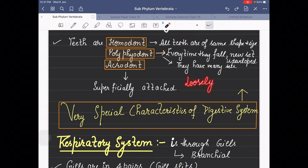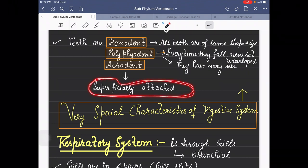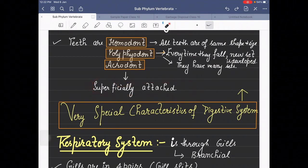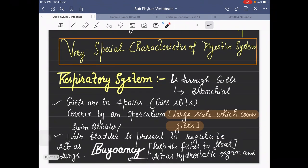Acrodont means teeth are loosely or superficially attached, and sometimes they fall off when fishes capture food. So homodont means same size and shape, polyphiodont means if they fall a new set is developed. This is a very special characteristic of the digestive system.